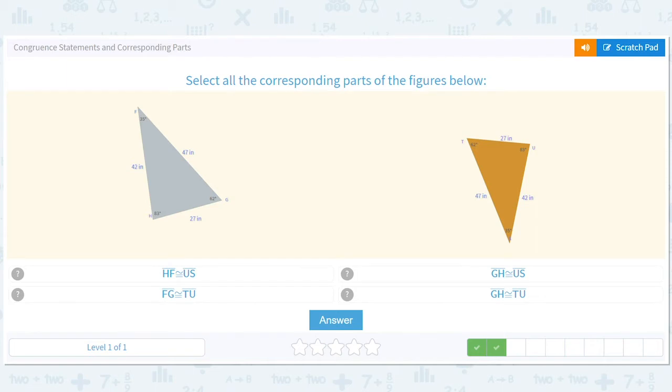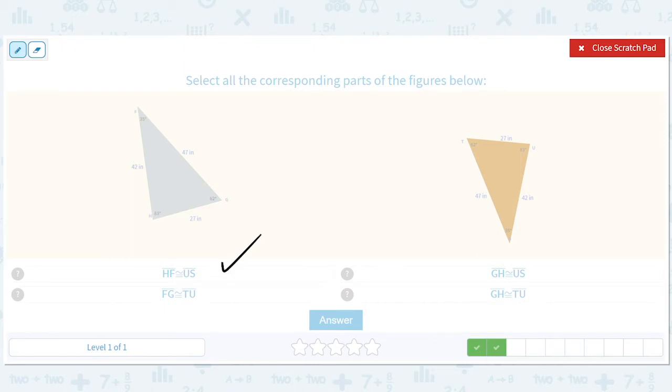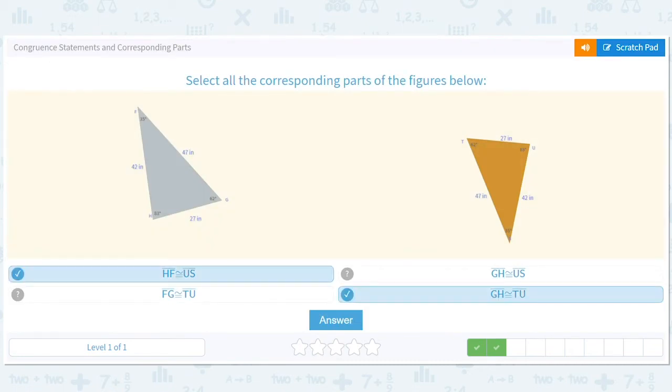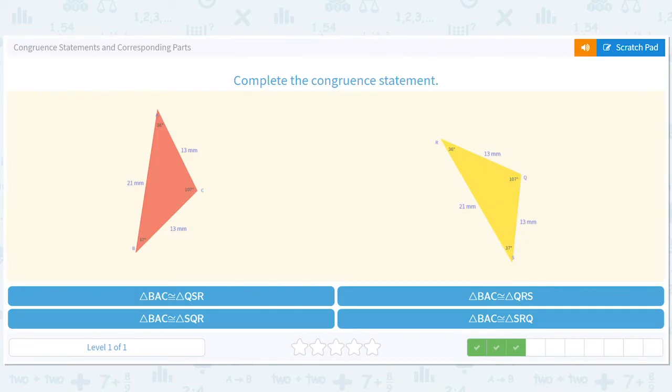Length HF. You know, I'll do it on the scratchpad. Length HF is 42. Length US is 42. Length FG is 47. Length TU is 27. So no. Length GH is 27. Length US is 42. 27, 42. Length GH is 27. Length TU is 27. So this one and this one. Just keeping track of stuff.